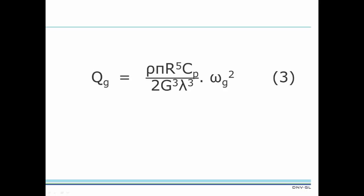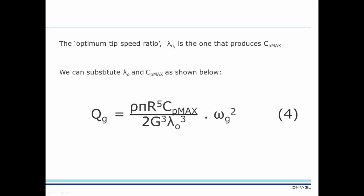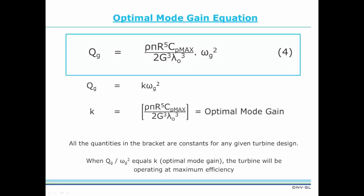The optimum tip speed ratio, lambda O, is the one that produces the maximum power coefficient, Cp max. If we substitute lambda O and Cp max into equation 3, we have the optimal mode gain equation. Equation 4 is the optimal mode gain equation. It shows generator torque proportional to generator speed squared. All the quantities in the bracket are constants for any given turbine design. The value of the bracket, K, is the optimal mode gain value. When the ratio of generator torque to generator speed squared equals the optimal mode gain value, the turbine will be operating at maximum efficiency.